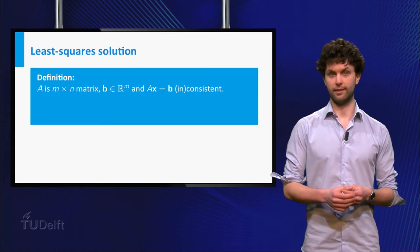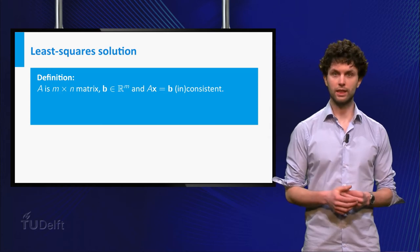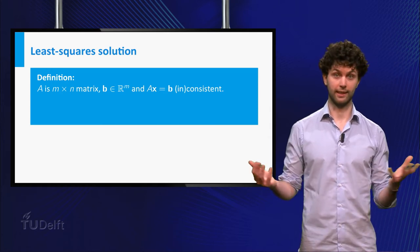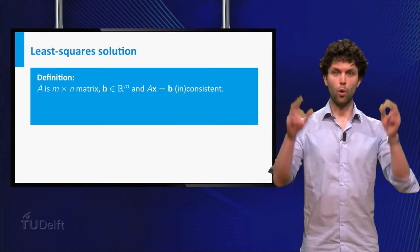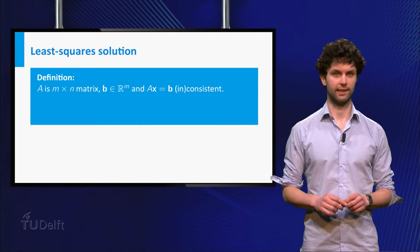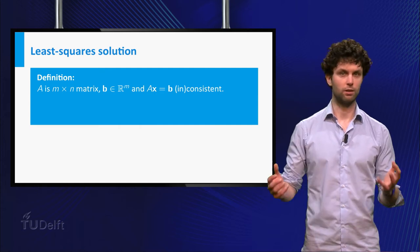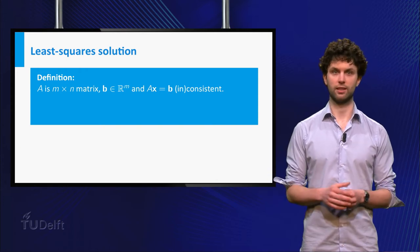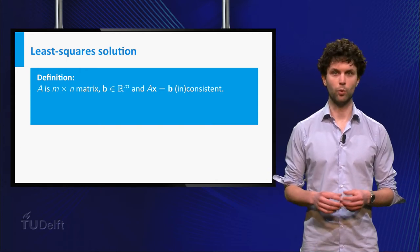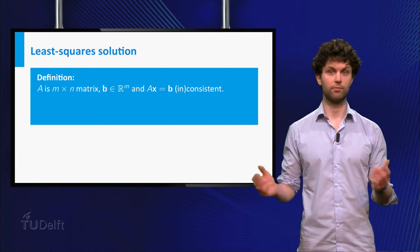In general, the least squares method deals with large systems of linear equations, which are usually inconsistent, but we would like to find a best almost solution anyway. So let A be an n by n matrix and b a vector in Rm, and consider the system Ax is b, which might or might not be consistent.